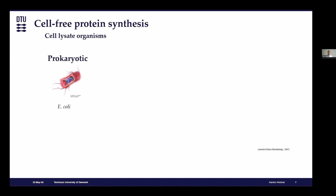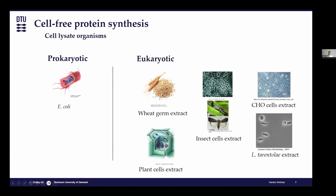The most common system we have used is the prokaryotic E. coli system, where we use the E. coli cell lysate and all its machinery to translate the transporters of interest. However, there is also a variety of other cell lysates from different organisms that can be used if you're working with mammalian proteins or proteins that require post-translational modifications — these range from plant cells, insect cells, other yeasts, as well as CHO cells.